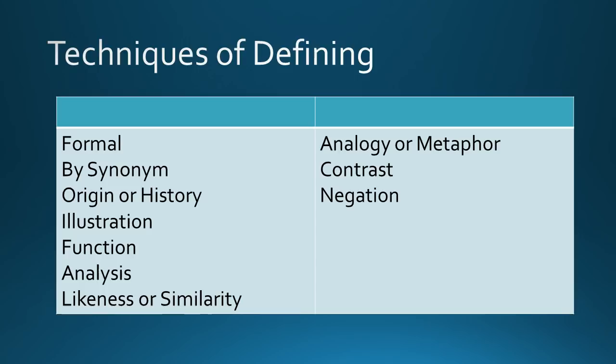Where term is the word to be defined, the equating verb is 'is', the genus is a class to which the term or object belongs to, then the differentia which are particular attributes or characteristics that distinguish the concept. For example, a robot is a machine that looks like a human being and performs various complex acts as walking or talking of a human being.